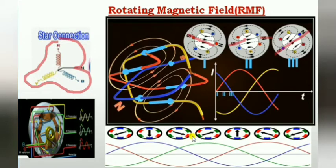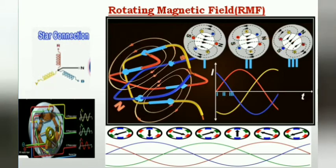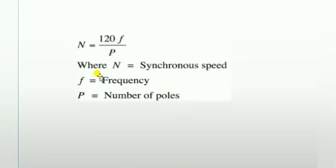The third sequence will change the phase and continue to rotate. Due to the rotating flux from the three-phase winding carrying three-phase currents, the change in phase sequences produces a rotating magnetic field. This rotating magnetic field rotates at synchronous speed. Synchronous speed is given as Ns, where Ns = 120f / P.